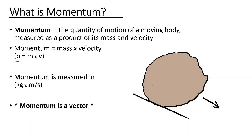I like this example of a snowball rolling down the mountain. As it's going down the mountain, it's gaining mass and it's gaining velocity. So the momentum is increasing because its mass is increasing and its velocity is increasing.